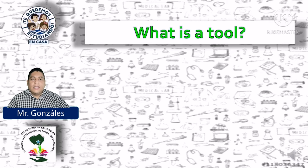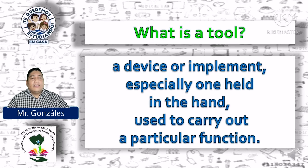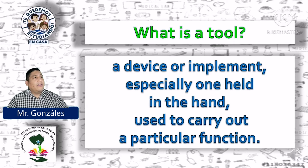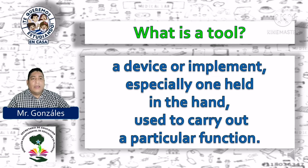What is a tool? ¿Qué es una herramienta? A device or implement, especially one held in the hand, used to carry out a particular function. Un dispositivo o implemento, especialmente uno que se sostiene con la mano, utilizados para realizar una función en particular.